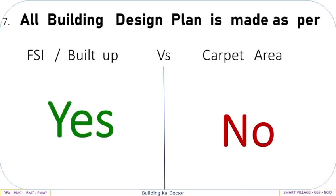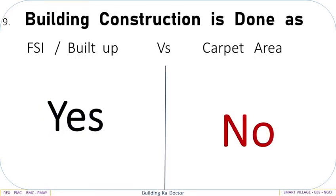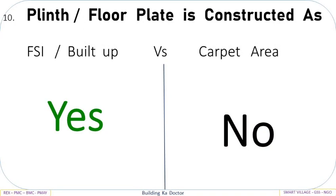All building design plans are made as per FSI Built-Up: Yes, vs Carpet Area: No. MCGM approves IOD using FSI Built-Up Area: Yes, vs Carpet Area: No. Building construction is done as FSI Built-Up: Yes, vs Carpet Area: No. Plain flat is constructed as FSI Built-Up: Yes, vs Carpet Area: No.